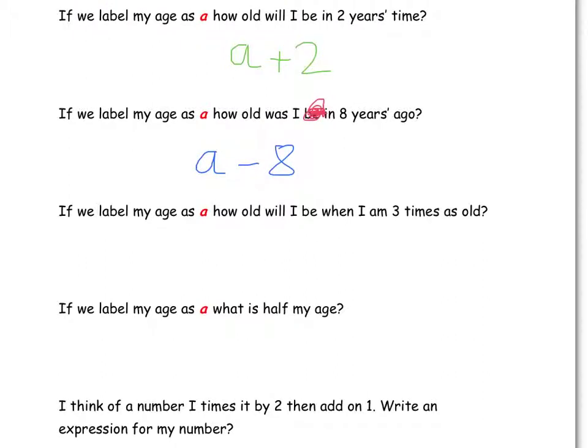If we label my age as a, how old will I be when I'm 3 times as old? So yet again, we don't know how old I am. All we're told is that we're labeling it as a. And 3 times as old, well, 3 times as old means we're timesing our current age by 3. And this can be tidied up a little bit by, instead of writing a times 3, we write 3a.